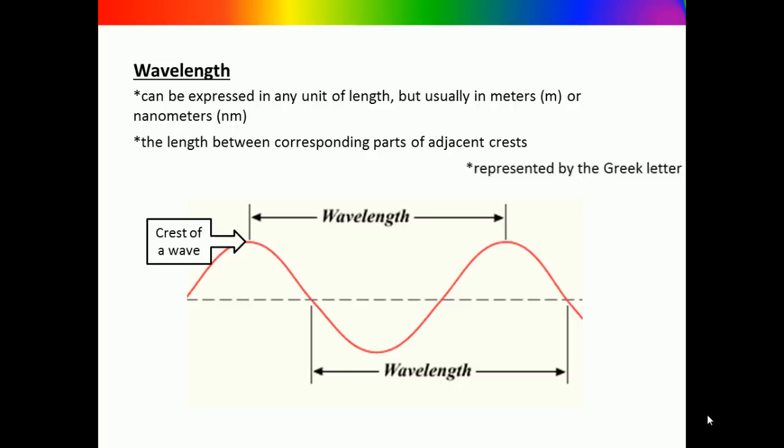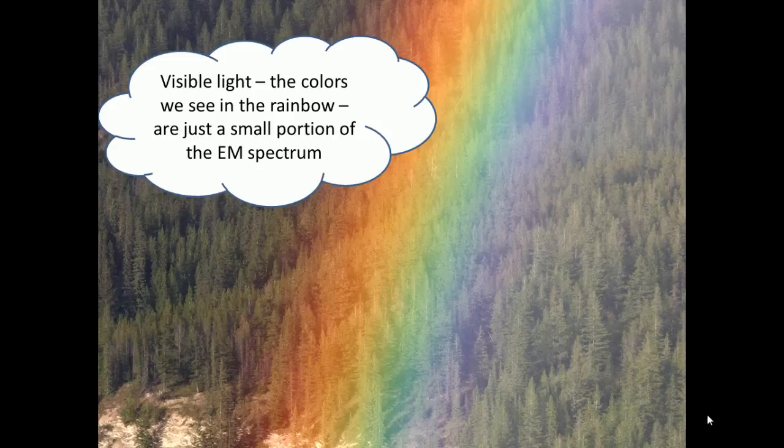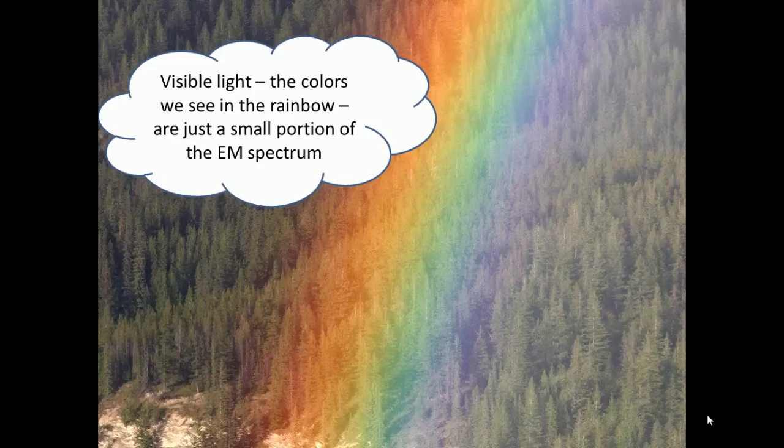Wavelength is represented by the Greek letter lambda, which looks kind of like an upside down Y. Although we typically think of light as the energy that enables us to see, visible light is just a very small portion of what is called the electromagnetic spectrum. Visible light includes the colors of the rainbow and the wavelengths range from approximately 700 nanometers to 400 nanometers.